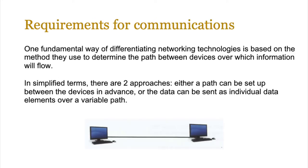One fundamental way of differentiating different technologies is based on the method used to determine the path between devices over which information will flow. If you have devices connected by one wire, data transmission is pretty straightforward. But in networks things become very complicated, especially if the distances become huge like global. In simplified terms there will be two approaches: either you fix a path at the beginning, or you divide the data into little packets and send them through different paths using a variable path.